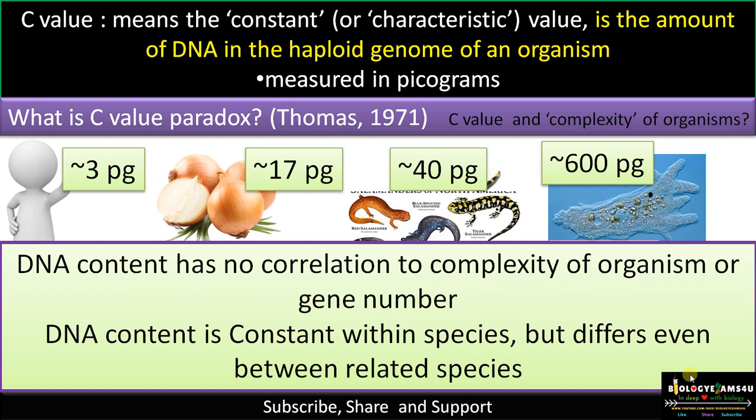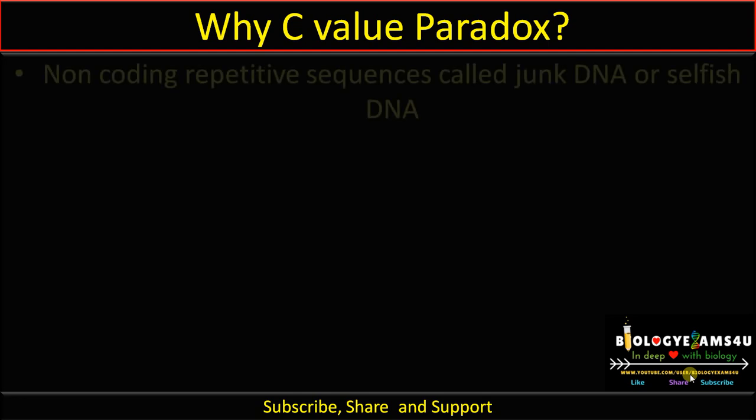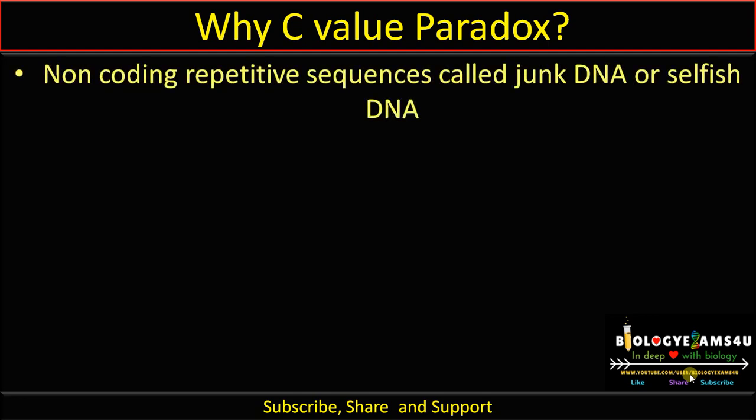Now, why does C value paradox exist? C value paradox is primarily due to the presence of non-coding repetitive sequences, called junk DNA or selfish DNA. The majority of the genome in organisms with a high C value is non-coding, indicating that C value has no relationship with gene number.